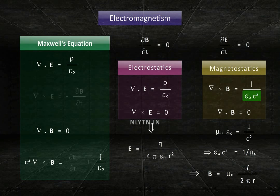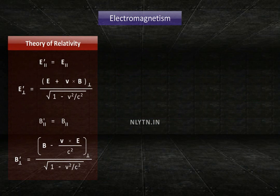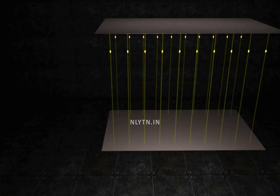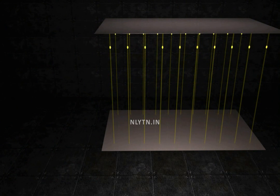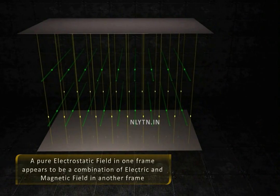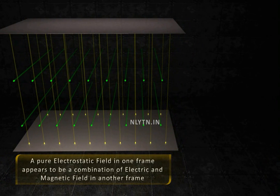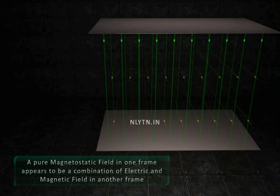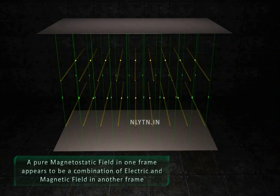This is what we have studied so far. In fact, the theory of relativity tells us that the electric and magnetic fields transform into each other. Let us say we have a pure electrostatic field. The moment we move perpendicular to the field, a magnetic field appears and the existing electric field is reduced. If we have a pure magnetostatic field, then the moment we move, an electric field appears and the magnetic field changes.